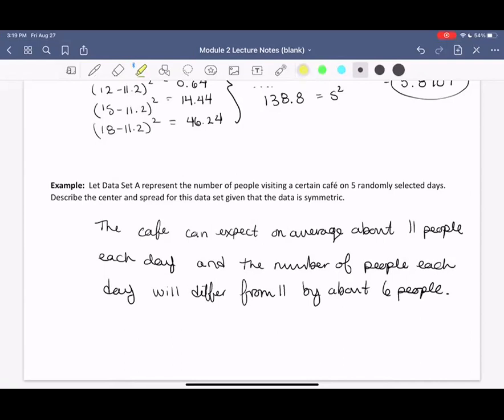Just to recap here, that average tells us on average how many people we can expect to see at the cafe. And then that 6 tells us, if we don't get the exact number 11 (obviously because there's variance and variation in our world), about how far away from 11 can we expect to see people? Well, probably give or take 6. So we can think that most likely there will be either 6 less people or 6 more people in the cafe from the average.